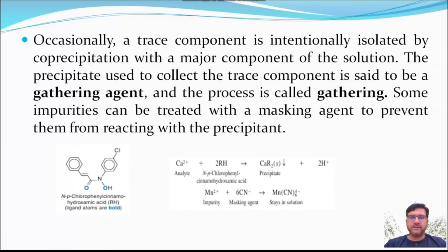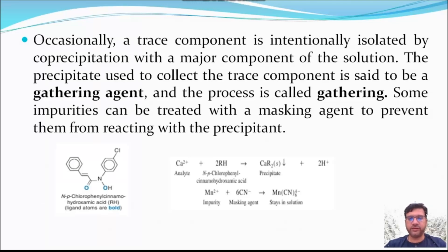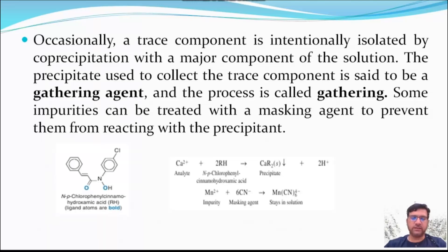A trace component is intentionally isolated by co-precipitation with a major component of the solution. The precipitate used to collect the trace component is called a gathering agent and the process is known as gathering. Some impurities can be treated with a masking agent to prevent them from reacting with the precipitant. For example, calcium is precipitated with chlorophenyl synomohydroxamic acid, and manganese, which is an impurity in this reaction, is masked with potassium cyanide.